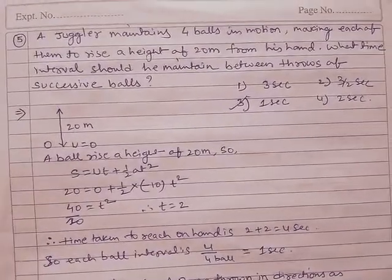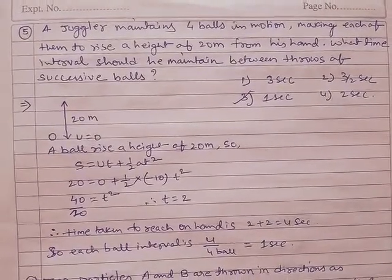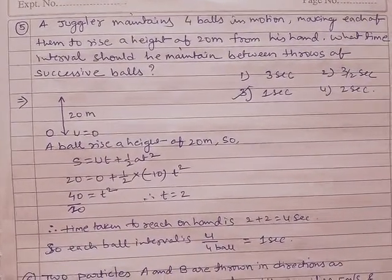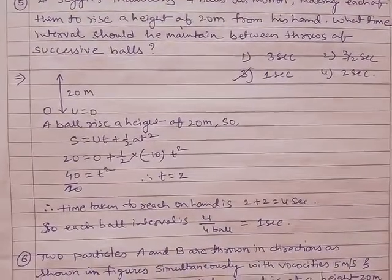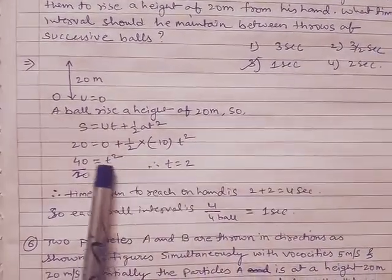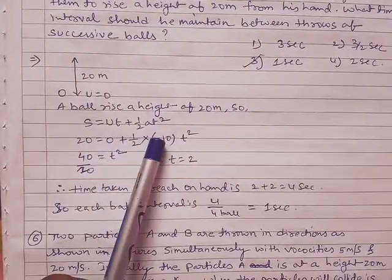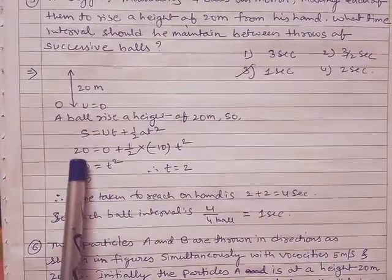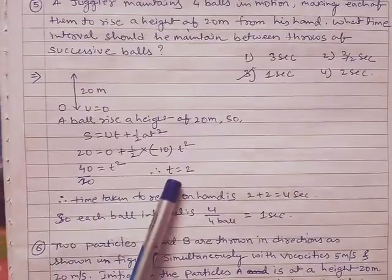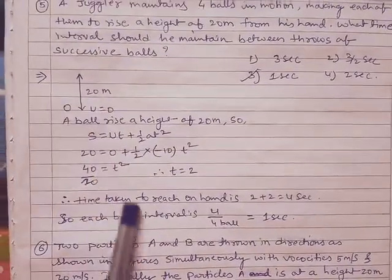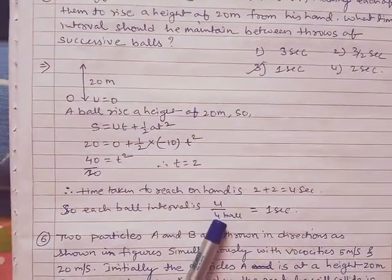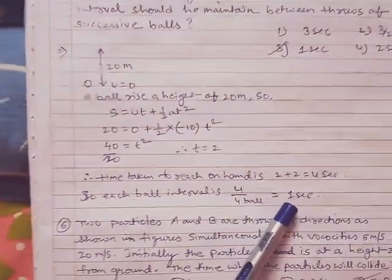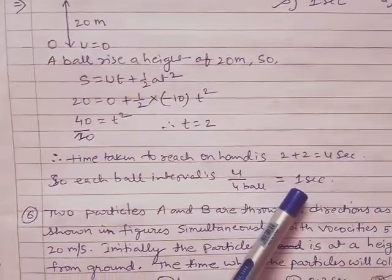In question number 5 you can see, a juggler maintains 4 balls. So I will work, first I will take 1 ball. So let me find the 1 ball, s is equal to ut plus half of at square, there is no doubt of this. So when I got time is 2, so ball ko neeche aane mein if it's a 2 lagega, total time is equal to 4 seconds. So 4 second mein 4 ball ko maintain kaise karenge, 1 second ka interval hoga. Simple se baat hai.